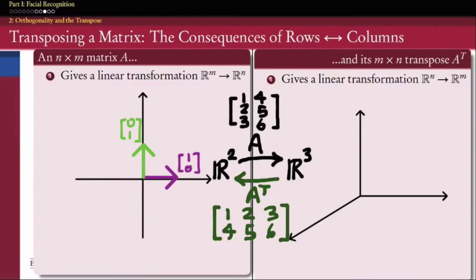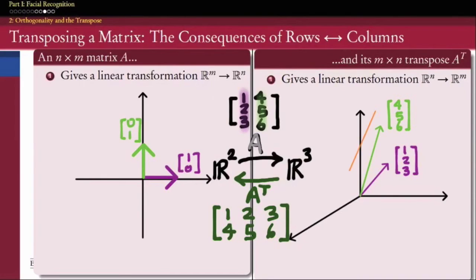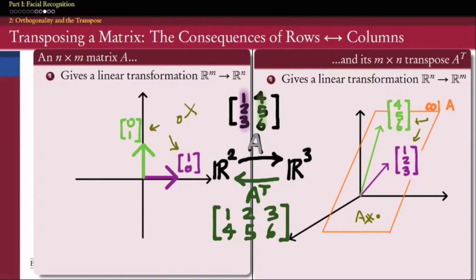As a reminder of how matrices and linear transformations are related: if we pick the standard basis vectors in R2 — 1, 0 and 0, 1 — and apply A to each, we get their images in R3. A times (1, 0) gives (1, 2, 3), the first column of A; A times (0, 1) gives (4, 5, 6), the second column. The set of all linear combinations of those vectors gives us a plane inside R3, which we call the column space of A — and this is exactly the same as the range of the linear transformation from x to Ax.